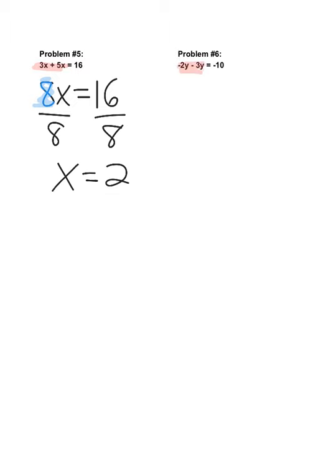Okay. Once again, highlight your variable terms. So I have negative 2y and negative 3y. Those are both the same exact variables. So to combine them, you combine the coefficients, the number in front. Negative 2, take away 3, is negative 5y. And that equals negative 10. Once again, you can draw a line down the middle if that helps you.